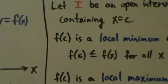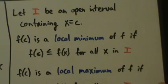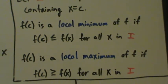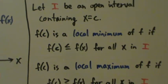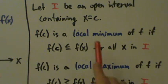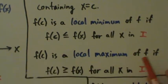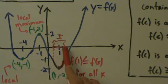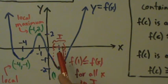So f of c is a local minimum of f if f of c is less than or equal to f of x for all x in i. How do we pick that open interval — how do we know which interval to pick? You might not really know right away, but the point is, as long as you can find just one open interval, no matter how large or how small, that satisfies the definition, then you're going to have a local min or a local max. This interval i satisfies that for us.